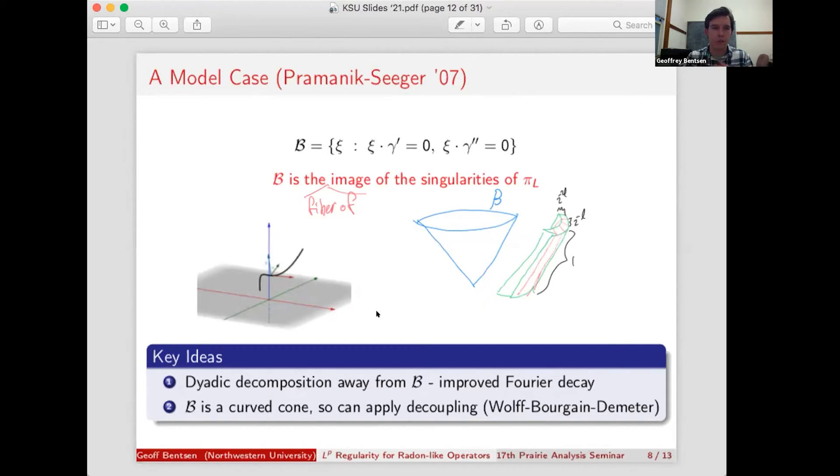So we've got this cone of bad directions, but away from that, we get better Fourier decay. And so the basic idea of their proof is you do a dyadic decomposition away from this set of bad directions. And on those dyadic pieces, you get improved Fourier decay, first off. And second off, those pieces are neighborhoods themselves of curved cones. And so we can apply Bourgain-Demeter decoupling. Now in Pramanik and Seeger's case, this was before 2015, so they used an early version of decoupling that was due to Wolff from 2000. But this is sort of the key idea that we want to try to generalize to find optimal LP regularity for local radon operators.